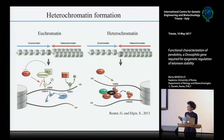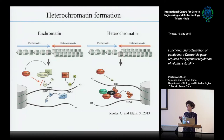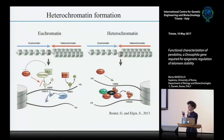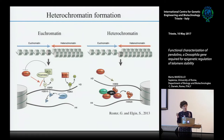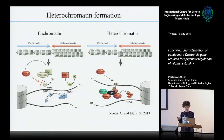By contrast, euchromatin is the active part of the genome, characterized by high levels of acetylation and also by phosphorylation of H3S10, mediated by the JIL-1 kinase, which is also able to phosphorylate and inhibit SUVAR3-9. These two proteins compete for the same site, so the action of all these enzymes defines the border between heterochromatin and euchromatin. We analyzed the effect of mutations in the genes encoding these proteins in combination with mutations in Pendolino.